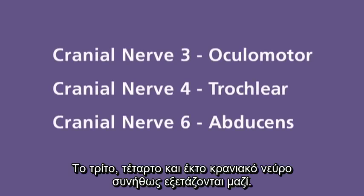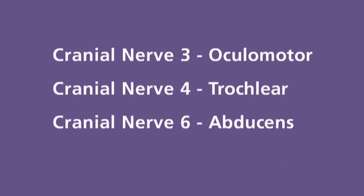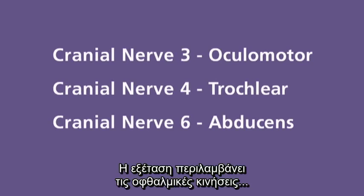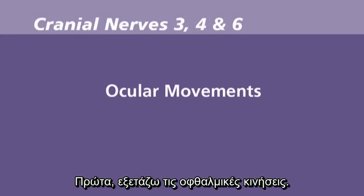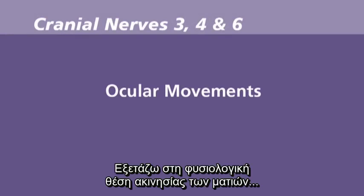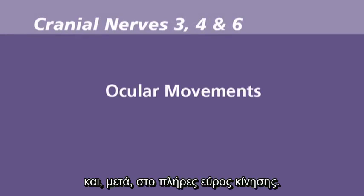Cranial nerves 3, 4, and 6 are usually examined together. The tested components are the ocular movements and the pupillary reactions. I check the normal resting position of the eyes, and then the full range of movement.